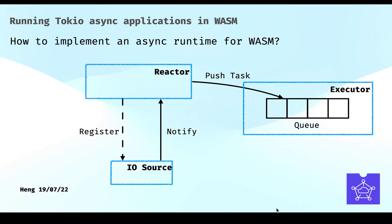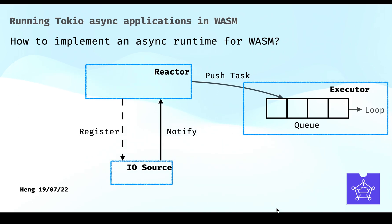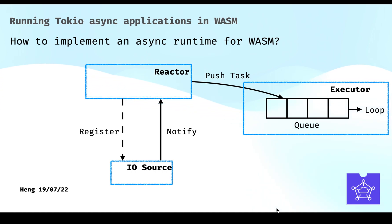As you may know, WebAssembly is single-threaded for now. For simplicity, we can just use a queue to store incoming tasks, and every time we pick the front task to execute until there are no more tasks. Note that during execution, tasks can append new tasks into the queue.